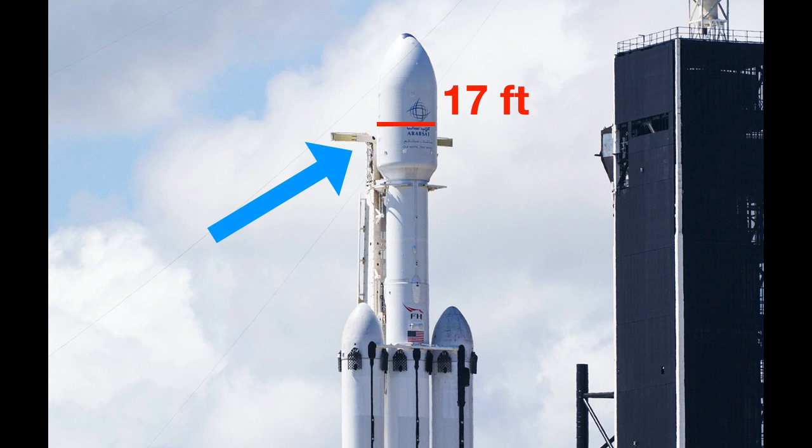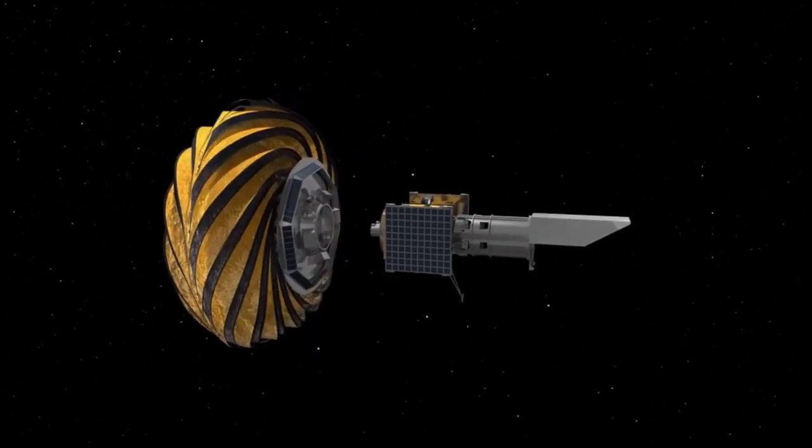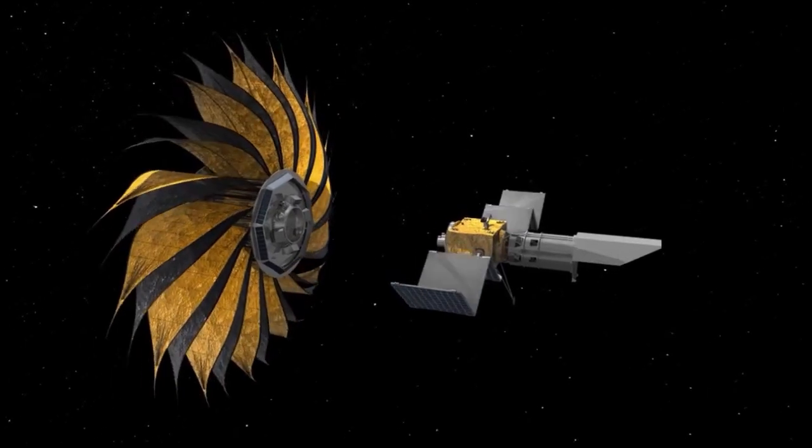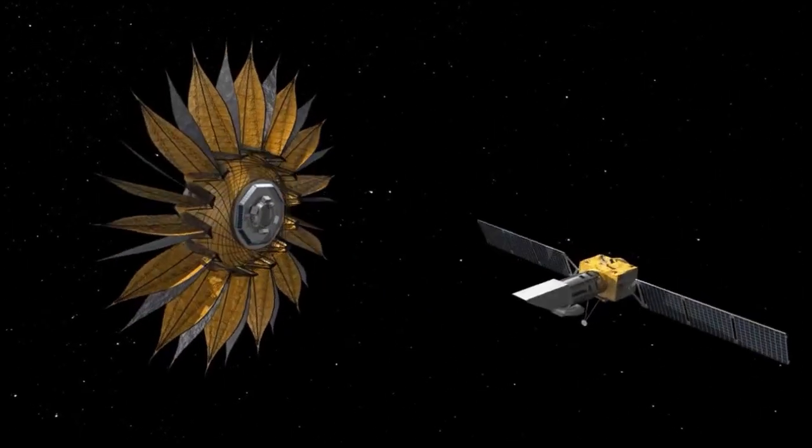So engineers at NASA turned to origami and built a plan to have the starshade do this. Watch as it unfolds into a single flat piece of material that can shade the telescope. Wow.